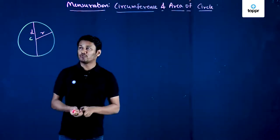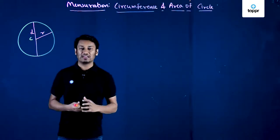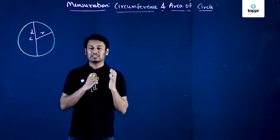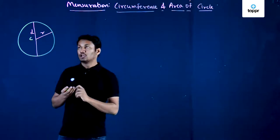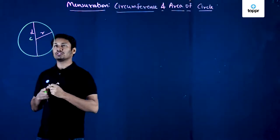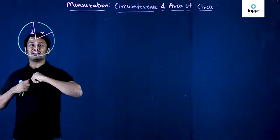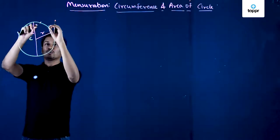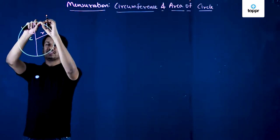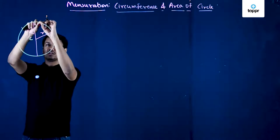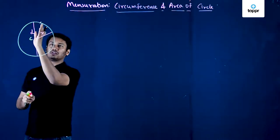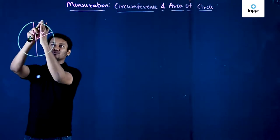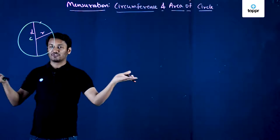Before finding the circumference formula, let us understand what circumference of a circle actually is. To understand circumference, I can break this circle at one point, and then represent this round shape of the circle in the form of a straight line, since I have taken a cut at any one point and can now straighten out the circle.